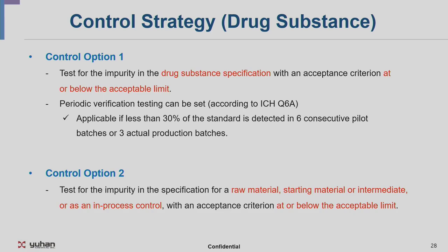Next is the control strategy. If the impurity is Class 1, 2, or 3, for both DS and DP the impurity should be within or below the acceptance limit. Knowledge about chemicals related to the manufacturing process is needed to create relevant control strategies. Control strategies are needed to minimize risks — both process design and analytics require participation by relevant personnel and experts. There are four options available.